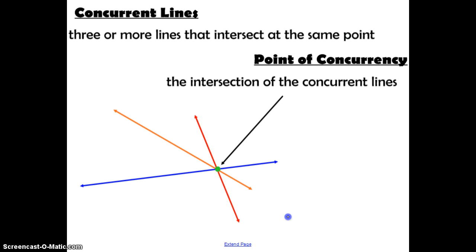Concurrent lines are three or more lines that intersect at the same point. So here we have this red, orange, and blue line that all intersect at one point in common, and that point is called the point of concurrency.